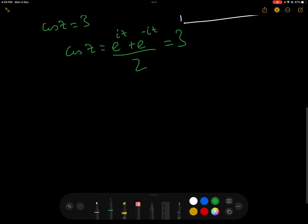That's the value that we want to find. So let's have a look at this equation and make it slightly simpler. We have e^(iz) + e^(-iz) - 6 = 0. That's just taking 2 across and then moving the 6.